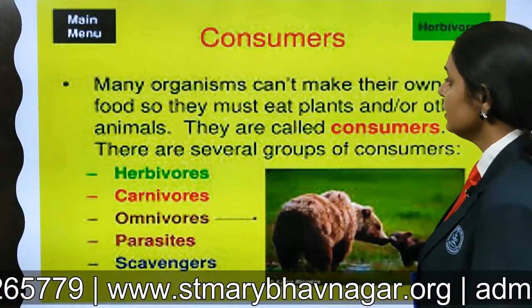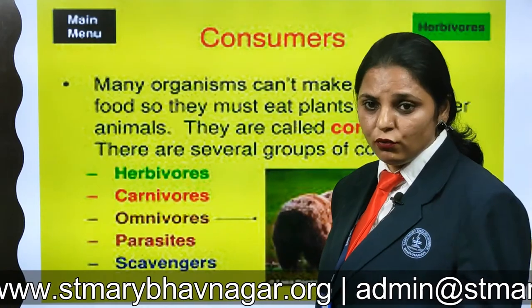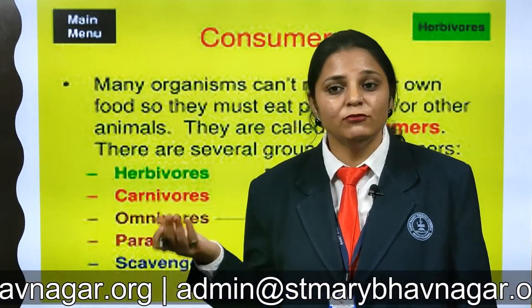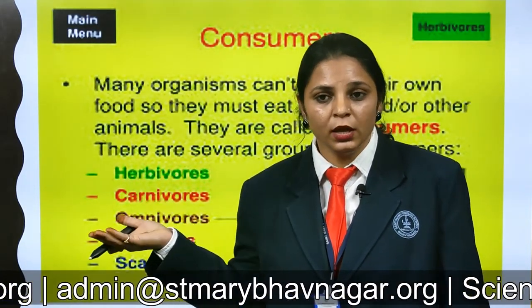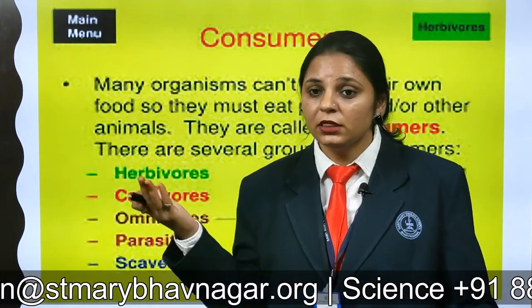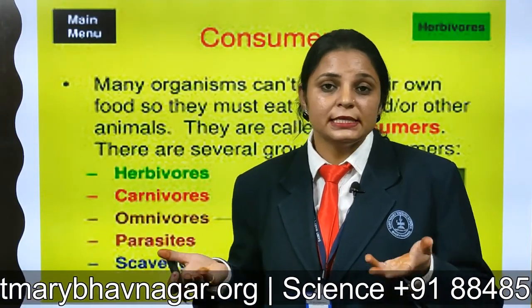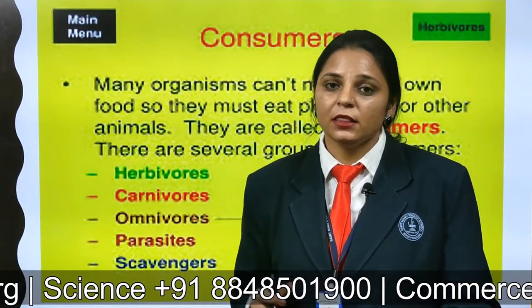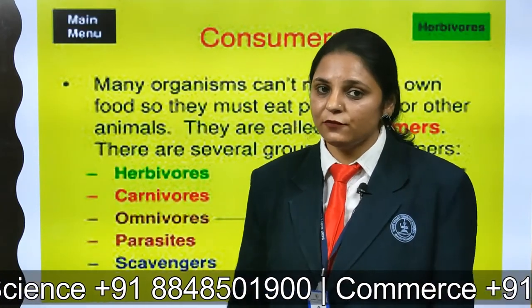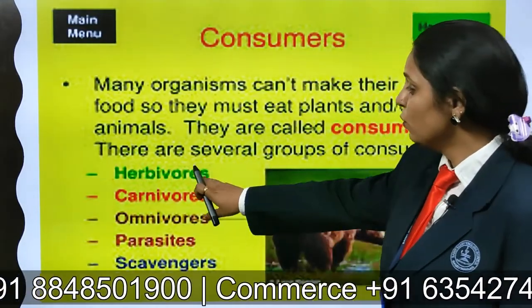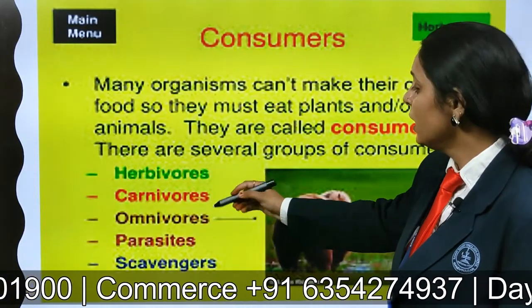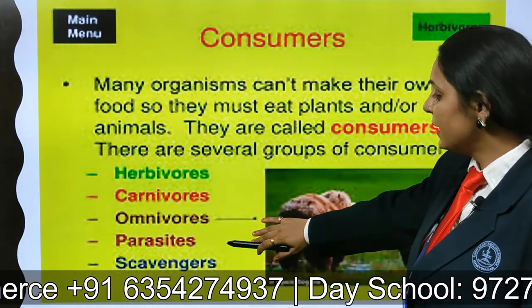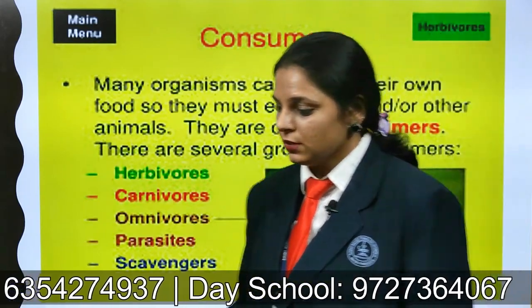Many organisms cannot make their own food, unlike plants which have the property to make their own food. But many animals do not synthesize their own food — they have to depend on others. On that basis, they are categorized further into herbivores, carnivores, omnivores, parasites, and scavengers.